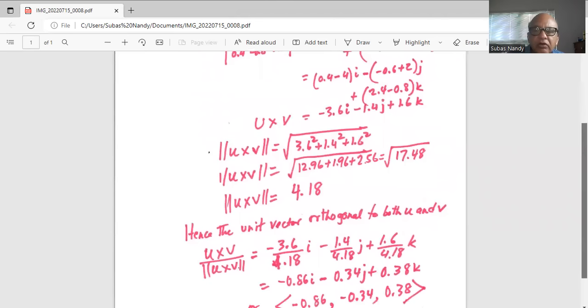Hence the unit vector orthogonal to both u and v will be u cross v divided by magnitude of u cross v. So it is minus 3.6 divided by 4.18, component of i, minus 1.4 divided by 4.18 component of j.